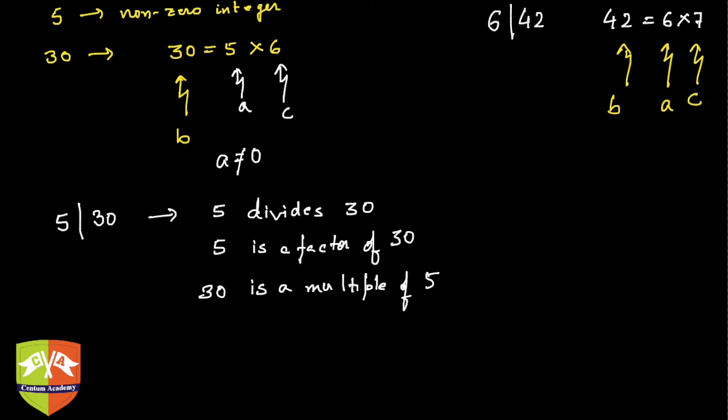Similarly I can say 8 divides minus 64. So if you have this doubt whether we can have a negative integer, yes you can. Minus 64 equals 8 into minus 8. Clearly this is my a which is not equal to 0, this is my c which is minus 8, an integer - there is no restriction on whether it should be positive or negative - and this is clearly my b.